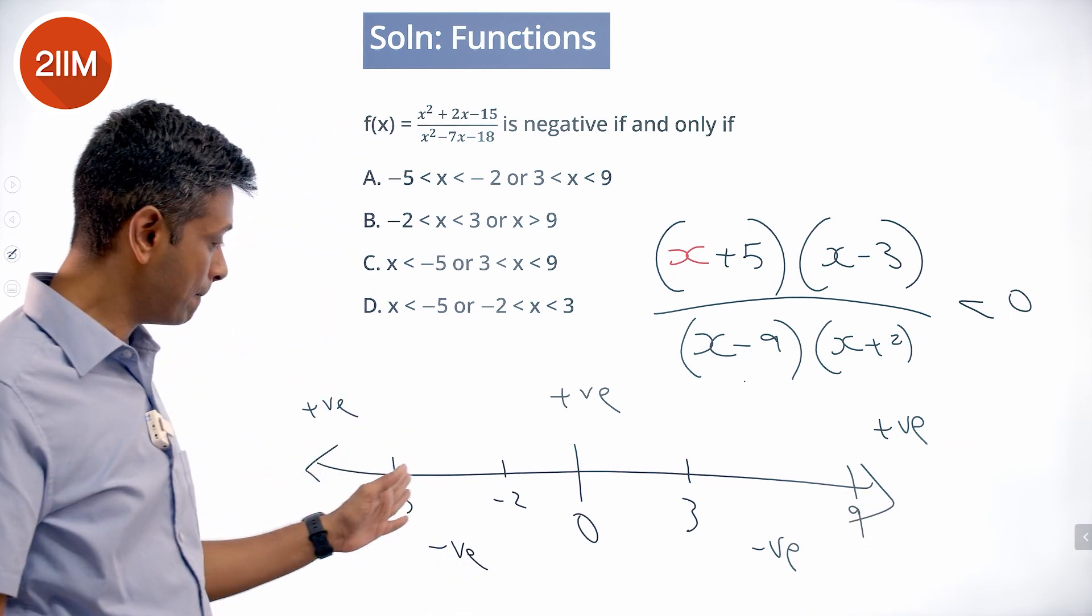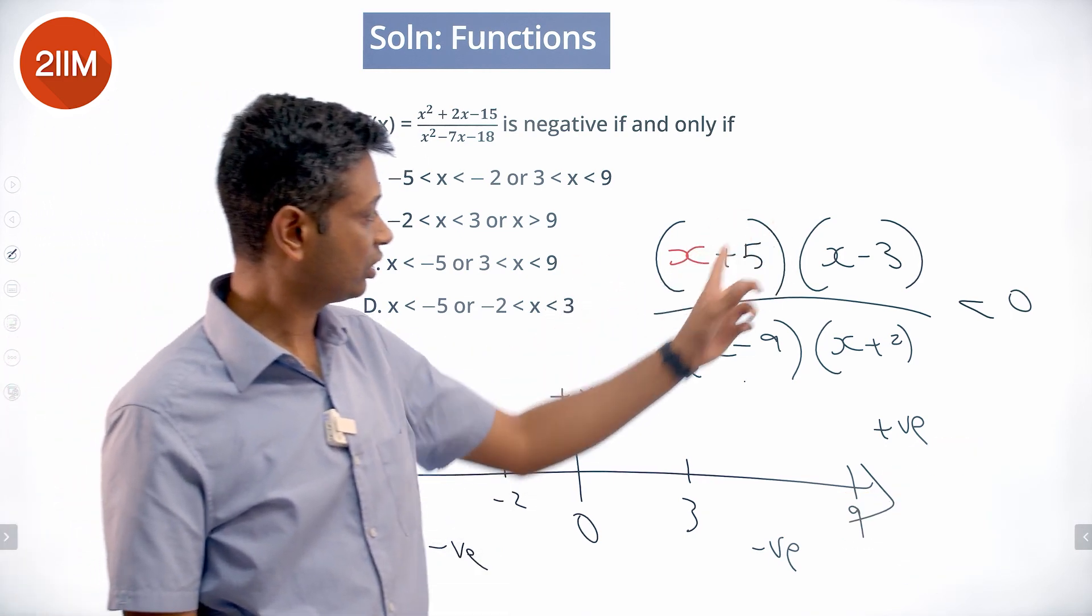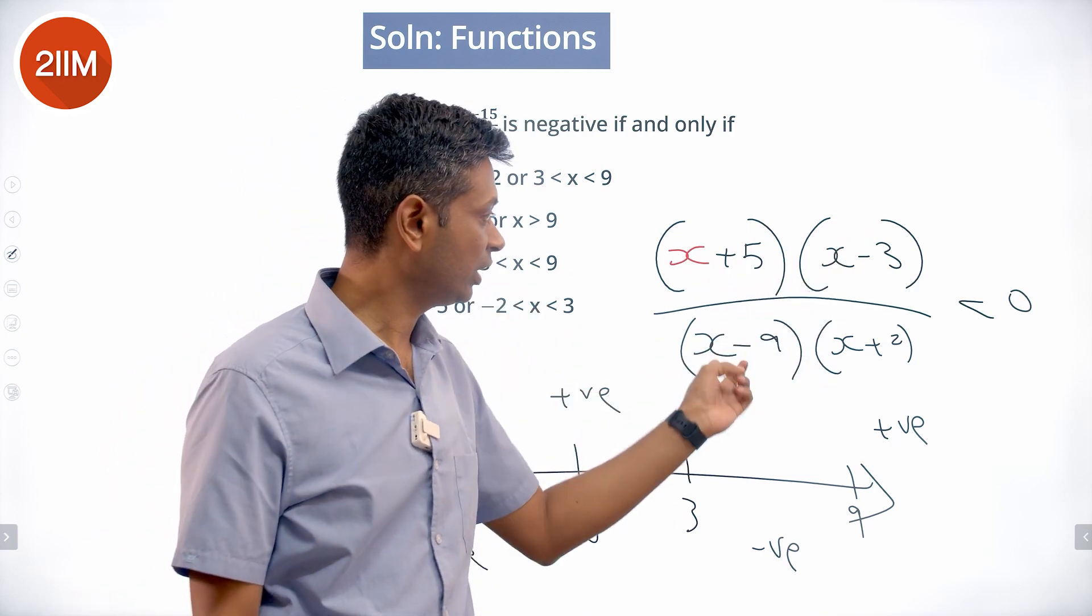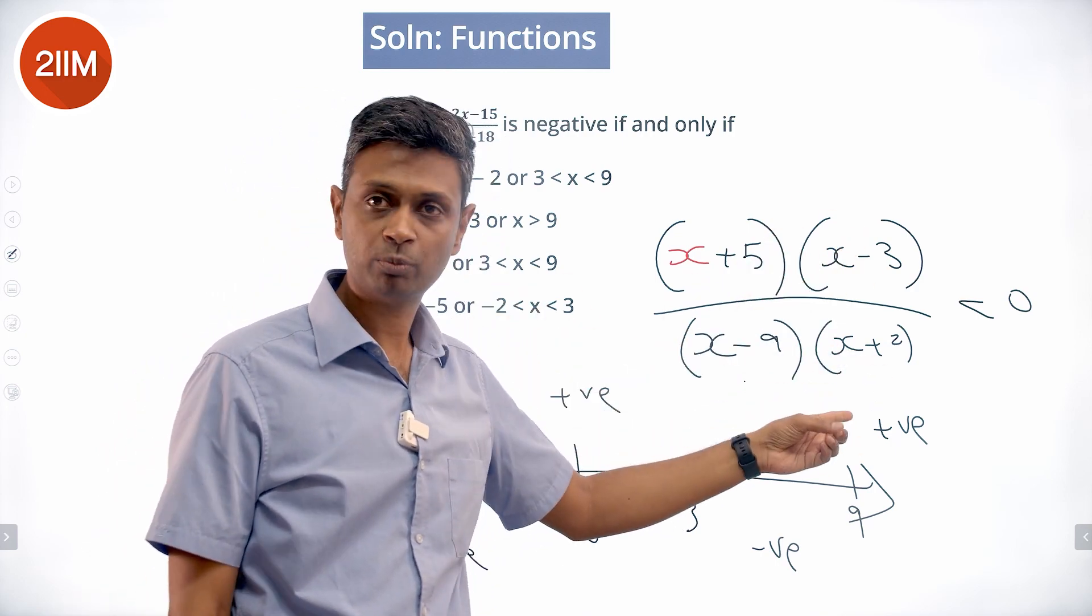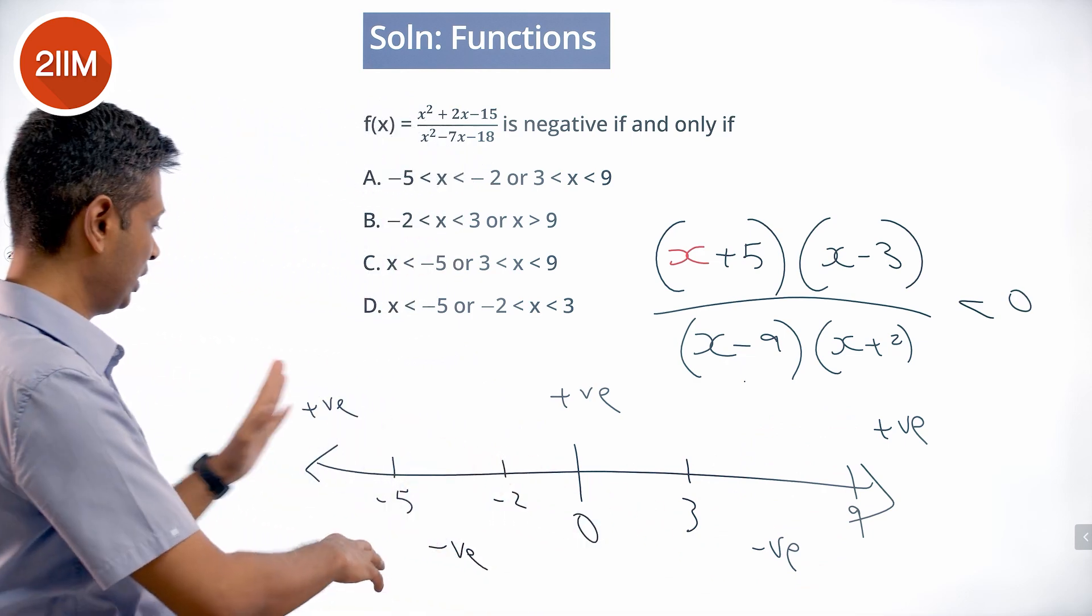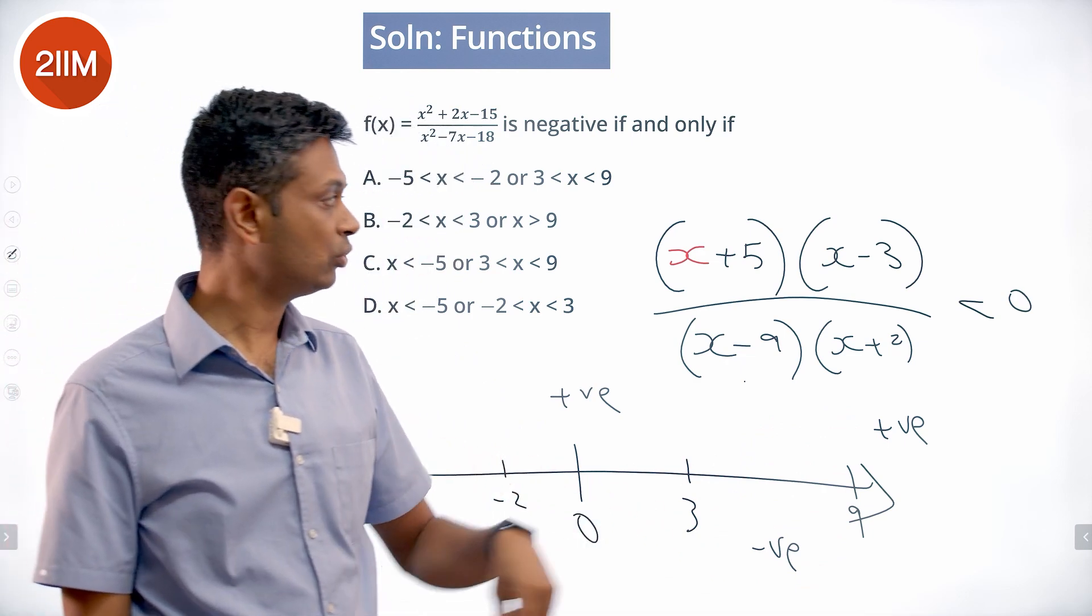Below -5, each of these terms is negative: negative, negative, negative, negative - which gives positive overall. So here the inequality does not hold good, since we're solving for the expression less than 0.